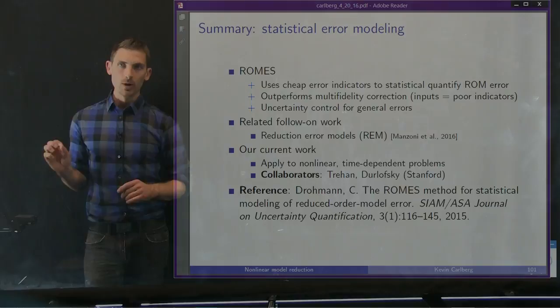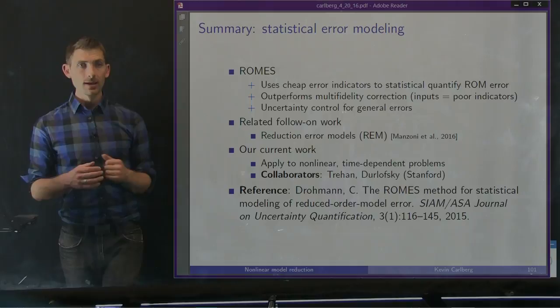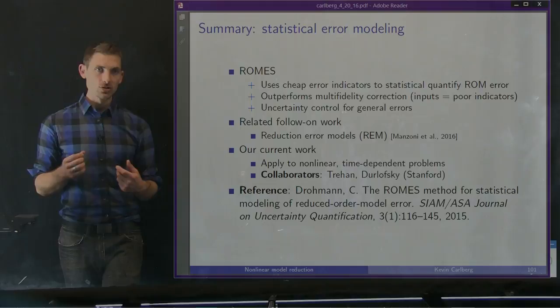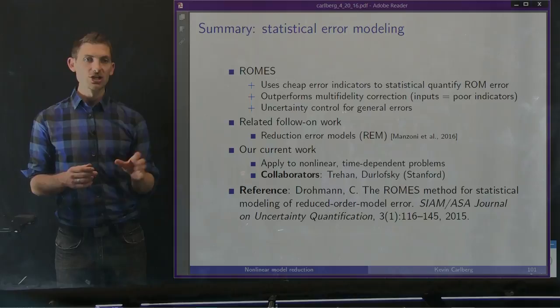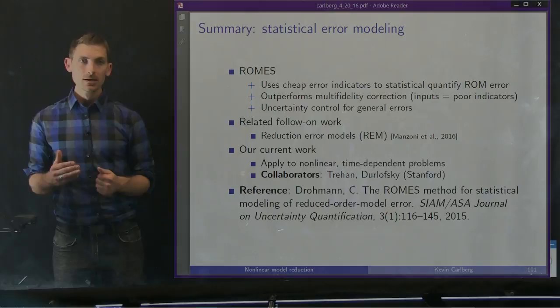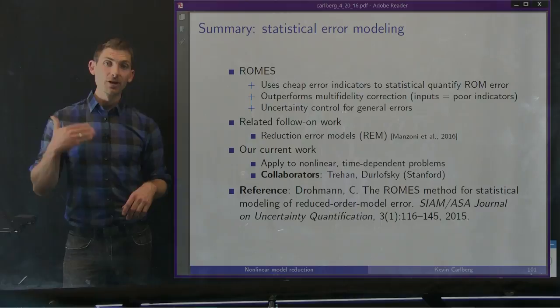To summarize, the ROMS method takes a totally different approach to error analysis — not devising rigorous error bounds, but instead building a statistical model of the ROM error using machine learning techniques. We use cheap indicators to statistically quantify the ROM error, outperform the typical multi-fidelity correction approach, and show we can control the uncertainty by using better bases for the dual problem. Related follow-on work was done by Andrea Manzoni and collaborators on the reduction error models approach. Our current work with Simit Trahan and Lew Derlewski at Stanford applies high-dimensional regression methods to automate ROMS model construction for non-linear dynamical systems.